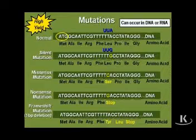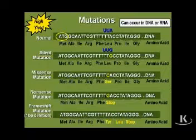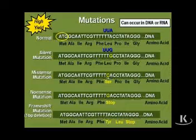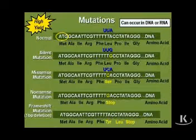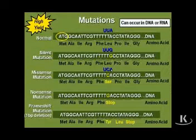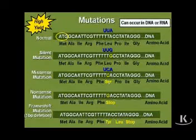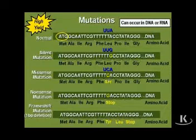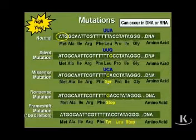The next type of mutation is the missense mutation. A missense mutation would happen when, say, TTA got switched to a TCA, corresponding to a UCA in the messenger RNA. When UCA is present in messenger RNA, the transfer RNA will bring in an amino acid — in this case, serine. What should have been brought in? Leucine. What's going to be brought in now? Serine.